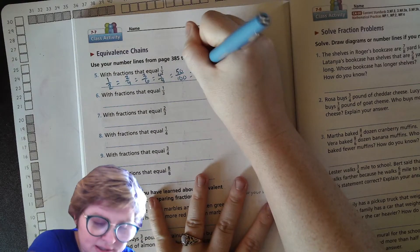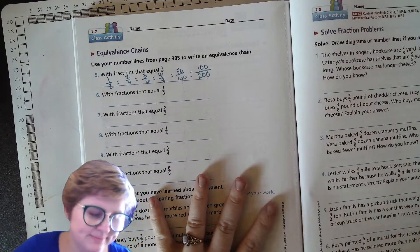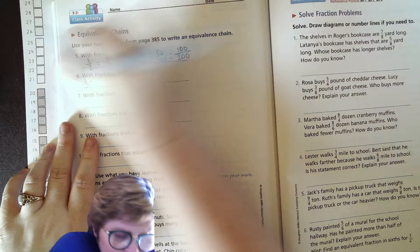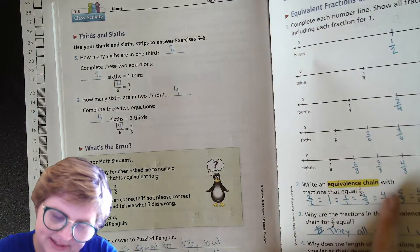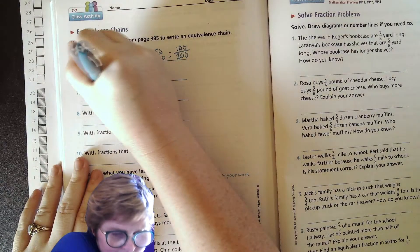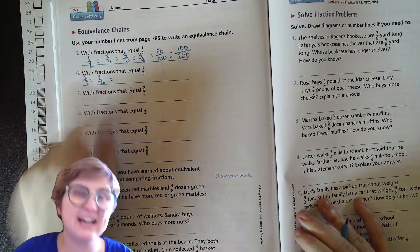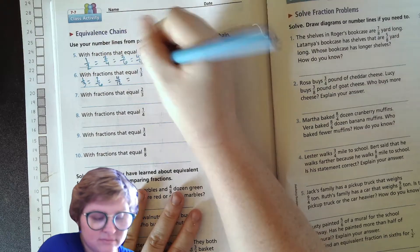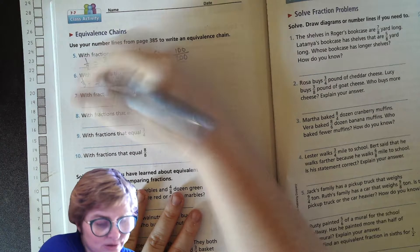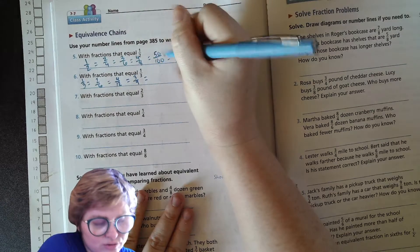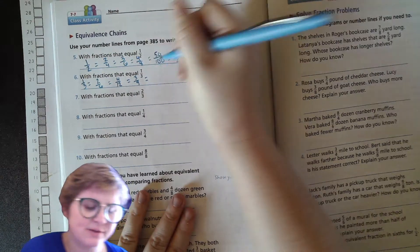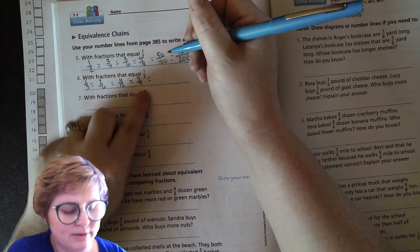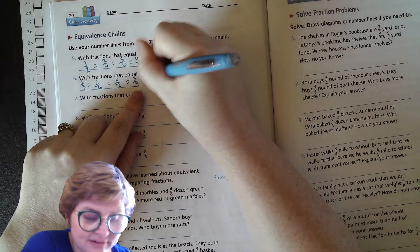With fractions that equal one-third, so you have one-third equals, let's see, that's two-sixths. What if you double both of those numbers to cut them into more pieces but be the same amount? Four-twelfths. Three-ninths if you multiply that by three. What else? What's another number set where if you multiply that number by three you get the bottom number? How about five-fifteenths?